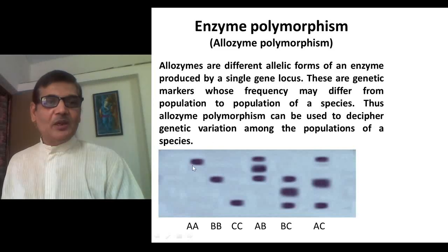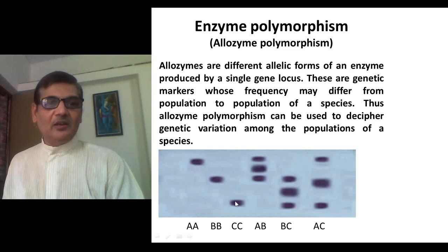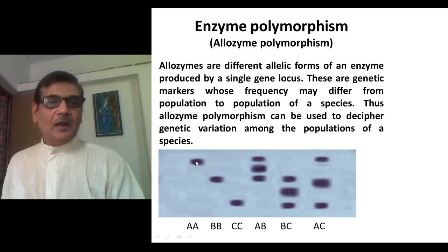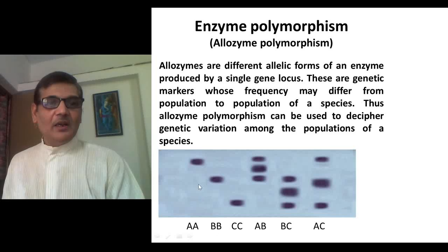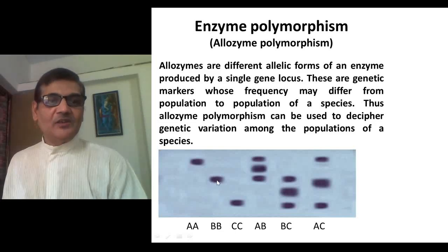In this lower diagram, you can see a polyacrylamide gel picture. There are six lanes, and in each lane you can see the banding pattern. In the first lane, a single band is present and this variant is for capital A, so the genotype of this individual will be AA. In the second lane, there is another variant which has moved quite faster, so the genotype is BB because there is a single band. In the third lane, a different variant is there and that is referred to as CC.